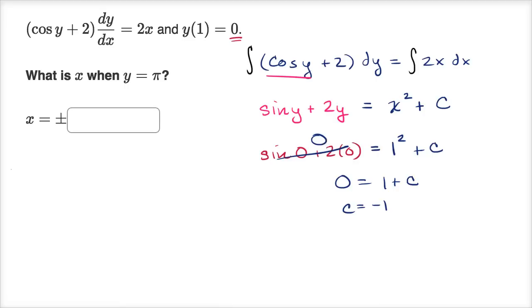So now we can write down the particular solution to this differential equation that meets these conditions. So we get, let me write it over here. Sine of y plus two y is equal to x squared, and our constant is negative one, so minus one.